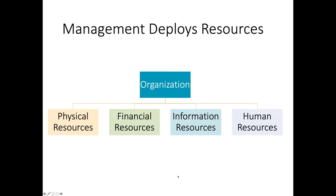There are four primary classes of resources that every single organization has to some measure. Yes, every organization — it doesn't matter if you're talking about a for-profit corporation, a non-profit, a bowling team — any organization will have some level of these four classes of resources: physical resources, financial resources, information resources, and human resources.